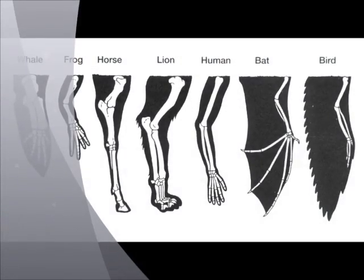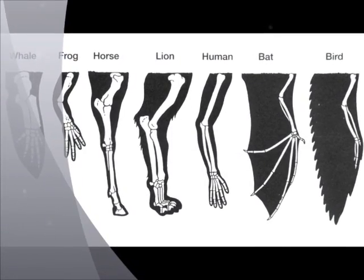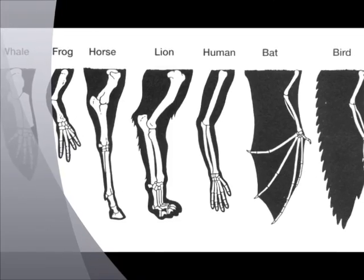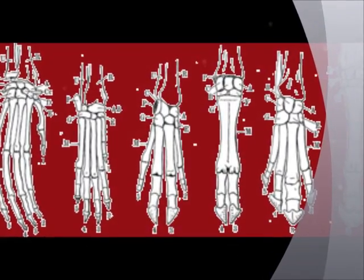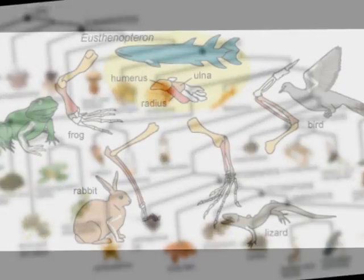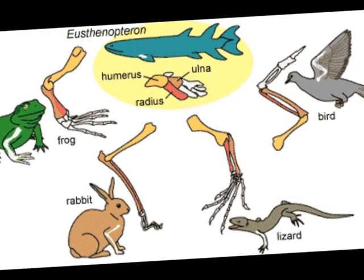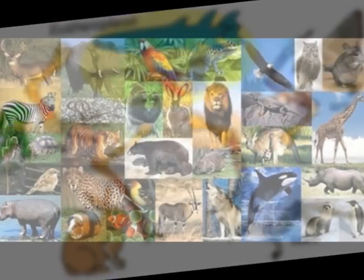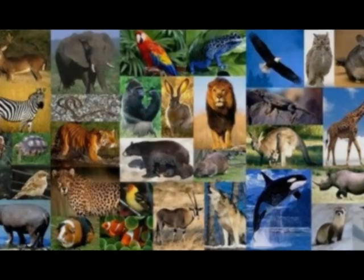Homologous structures are organs or parts of an animal that are the same, or evolve from the same thing, but function or are size and shape differently. These traits are descended from a common ancestor. A very common homologous structure is a bone or bone structure, as almost all multicellular organisms possess bones.